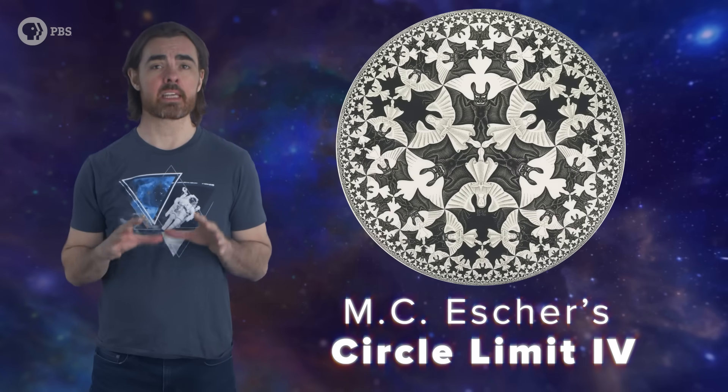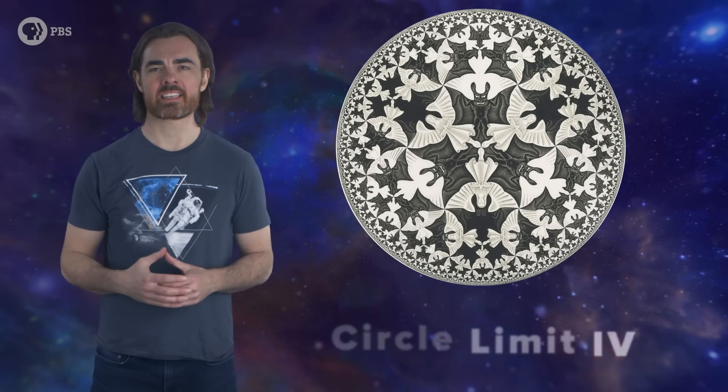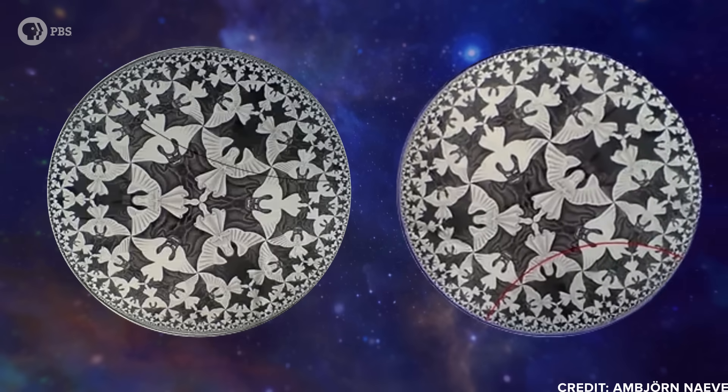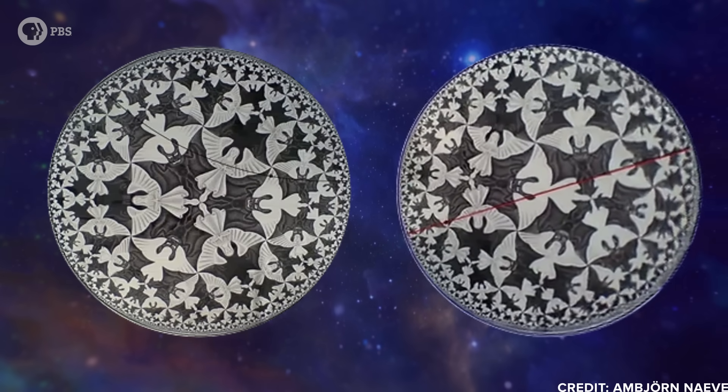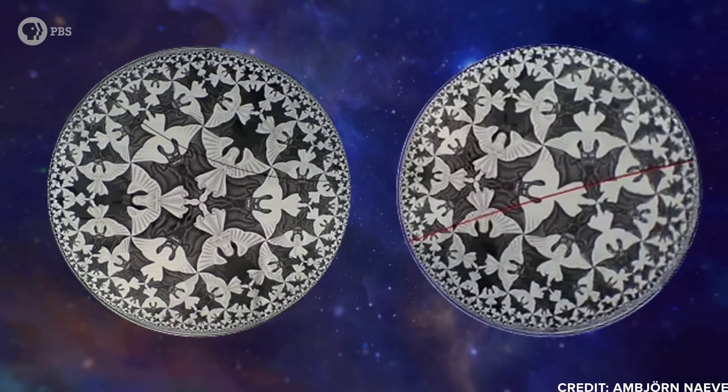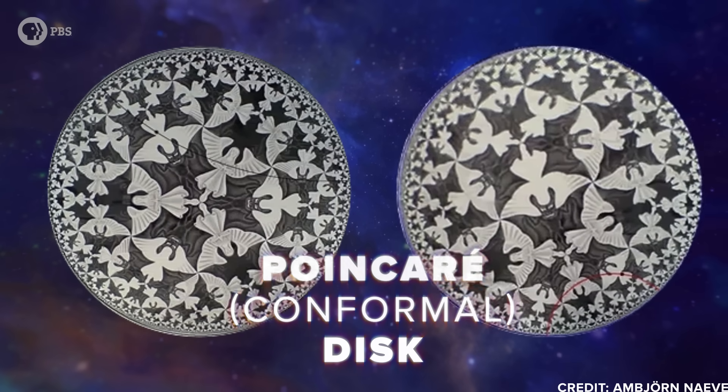This is MC Escher's Circle Limit 4, the final in a series of woodcuts inspired by a projection of the hyperbolic plane called the Poincaré, or conformal, disk. The basic construction is straightforward enough.